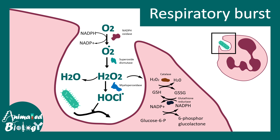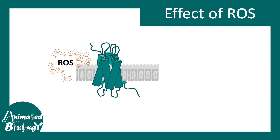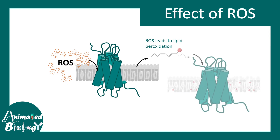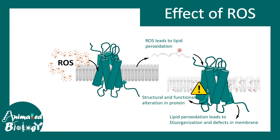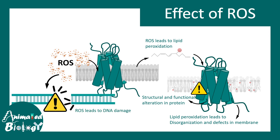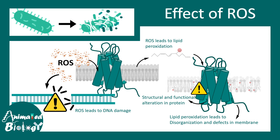These reactive oxygen species act on the bacteria and lead to its destruction. ROS can lead to lipid peroxidation — the attachment of a peroxide group onto the lipid. These free radicals are highly reactive and lead to overall disorganization of the membrane. ROS can also oxidize several bonds in proteins, causing structural and functional alterations. ROS can also create DNA damage. All of these damages together lead to destruction of the bacteria and elimination of the pathogen.